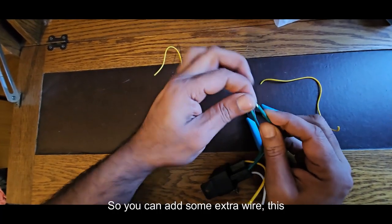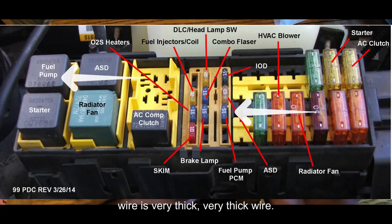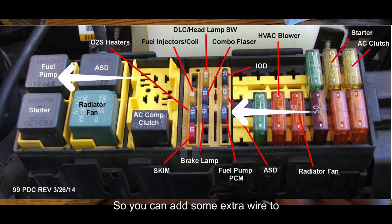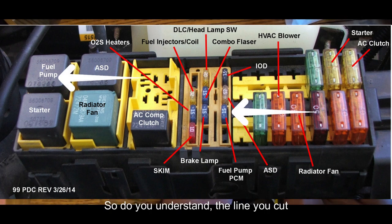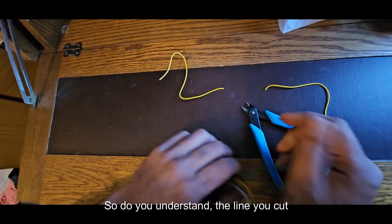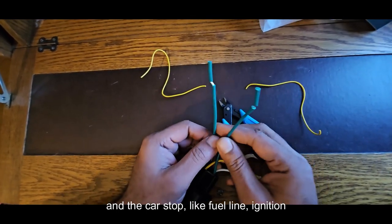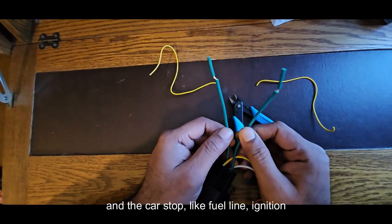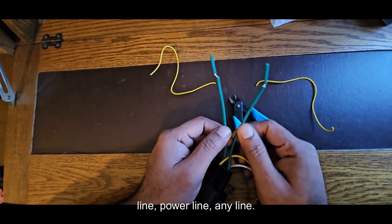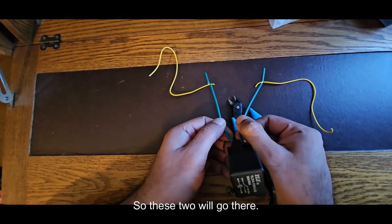You can add some extra wire. This wire is very thick, so you can add some extra wire to make it thin. So do you understand, the line you cut and the car stops, like fuel line, ignition line, power line, any line. So these two will go there.